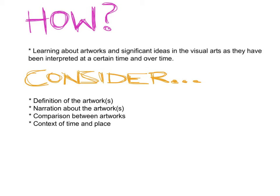So how do art historians do this? It's all about studying art over time. They have extensive knowledge about how artworks have been interpreted at a certain time and over time. Through their writing they consider, like the critic, a definition of the artwork. They also narrate the artwork — making that connection between what they're seeing, the visual features, and what was going on at the time and how they're connected. They can offer comparisons between artworks of different times and different art movements, and they really place emphasis on the context of time and place and just how influential that is on the creation of artworks.